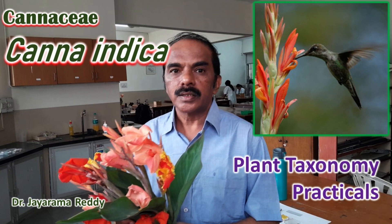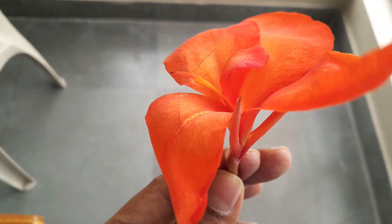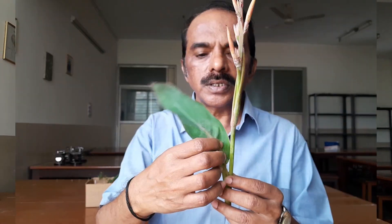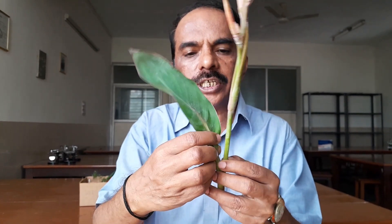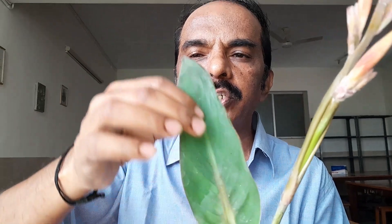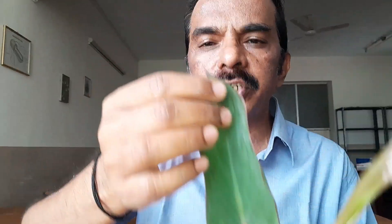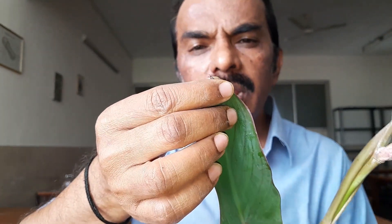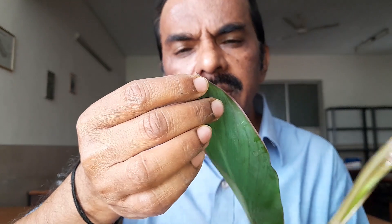It is an ornamental herb which is grown in all gardens. It has a rhizomatous stem and a pseudo stem with sheathing leaf bases. The leaf is simple and unicostate with parallel venation. You can see the parallel venation; the tip is acute and minutely cirrhose.